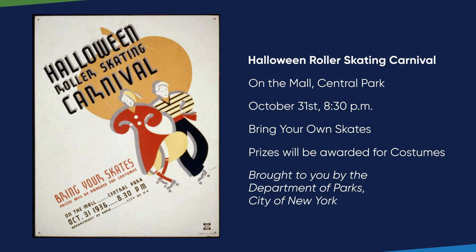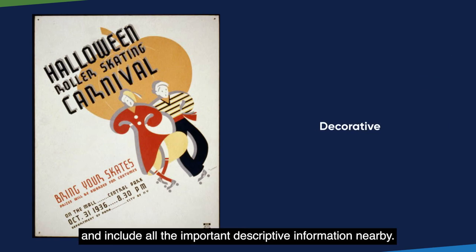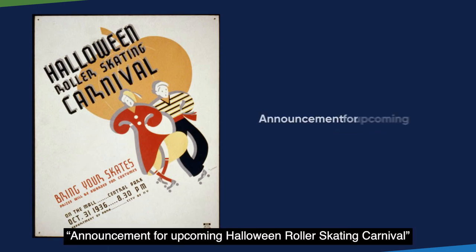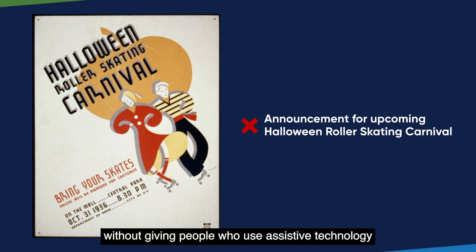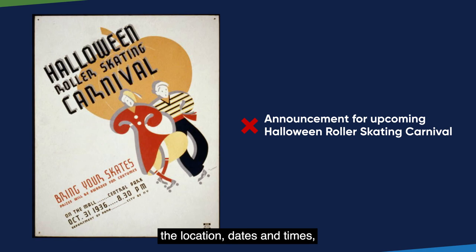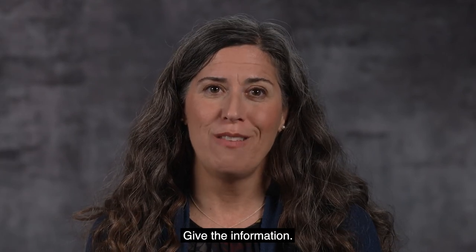Or Option 2: mark the image as decorative and include all the important descriptive information nearby. Important — what you don't want to do is say something like, Announcement for upcoming Halloween Rollerskating Carnival, without giving people who use assistive technology the same information that is available to everyone else — notably the location, dates and times, and that prizes will be awarded for costumes. Don't just describe the purpose of the image. Give the information.